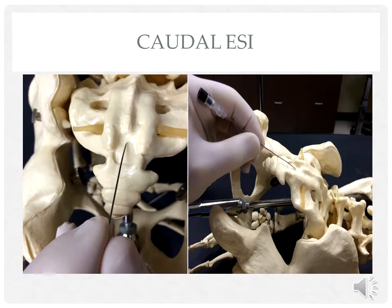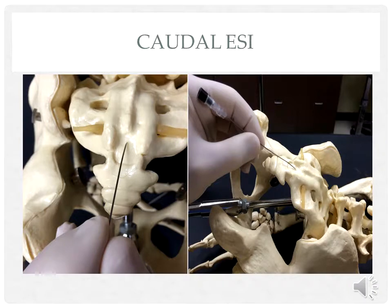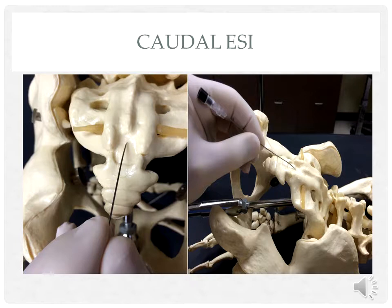Sterile gauze should be placed in the mid-gluteal cleft below the expected needle entry point for increased sterility. The caudal epidural space is approached via the sacral hiatus. Even with the use of fluoroscopy, this procedure may require a manual identification of the sacral cornua. The sacral cornua are located on either side of the sacral hiatus. Fluoroscopic imaging will often reveal an opaque inverted U-shaped landmark as the entry to the sacral hiatus.